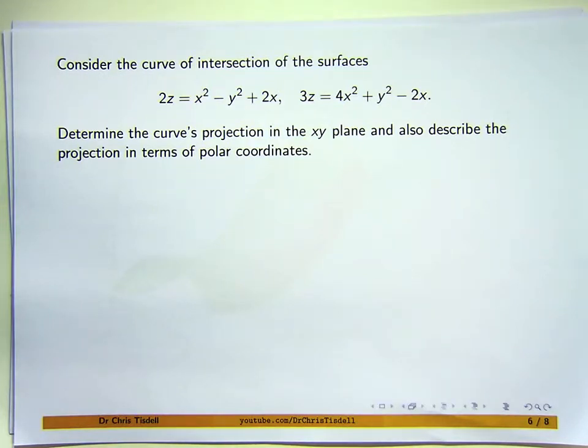Here we have a question involving surfaces. We can rearrange those two equations to make z the subject, so you've got z equals a function of two variables. We're asked to consider the curve of intersection of the two surfaces and determine the curve's projection in the xy plane and describe the projection in terms of polar coordinates.